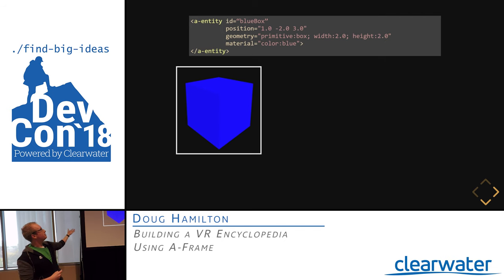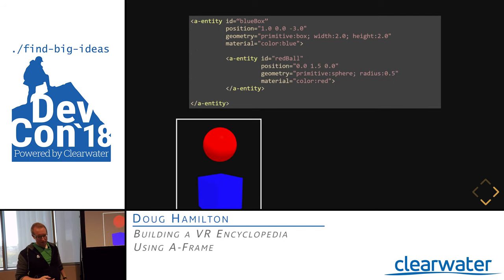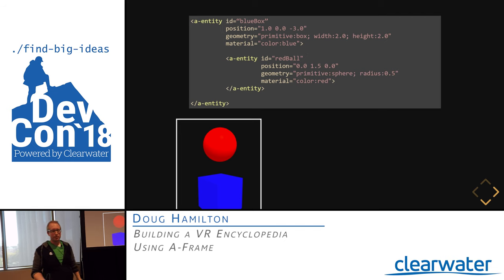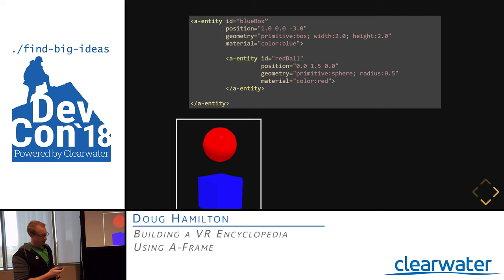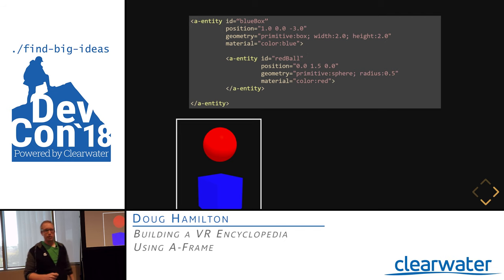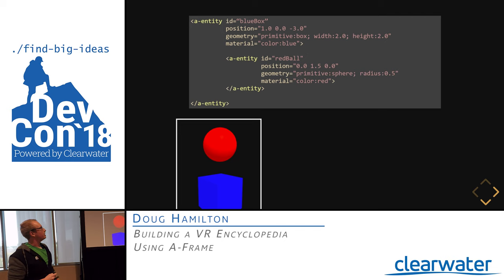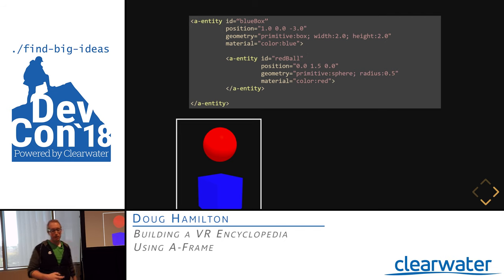You can also add child entities, which actually nests entities within one another. This defines what's known as a scene graph, where our red ball is positioned relative to the blue box's position and inherits its rotation and scale. When we position the red ball at 1.5 units on the Y axis, it will always be 1.5 units above our blue box. The red ball uses the same components, just with different configurations. That's basically the ECS pattern in A-Frame.